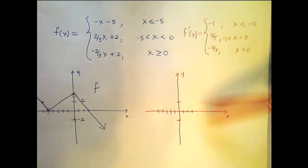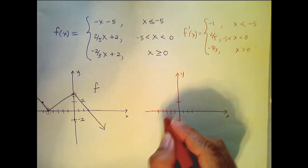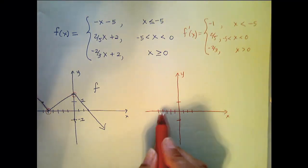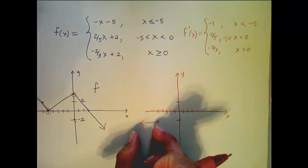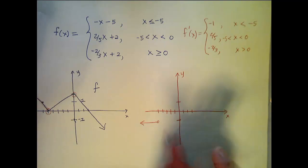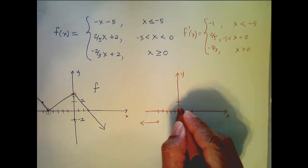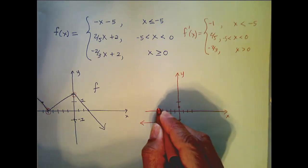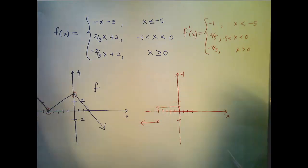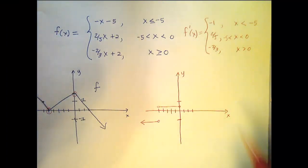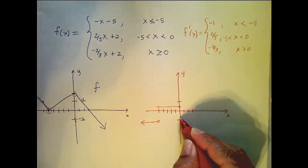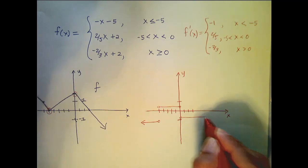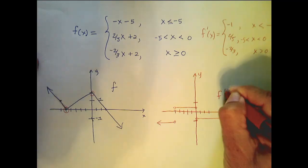So now we can take all this information and sketch the derivative function. It's the constant function negative 1 for x less than negative 5. It is 2 fifths for x between negative 5 and 0 — so 2 fifths is somewhere in the middle — and remember it doesn't exist at negative 5 or 0, so I have open circles and I draw my horizontal line to represent the constant function y equals 2 fifths. And lastly, it's negative 2 thirds for x bigger than 0. This is my graph of f, and this is the graph of its derivative.